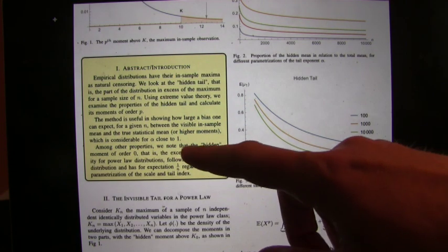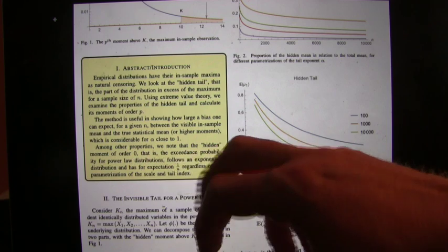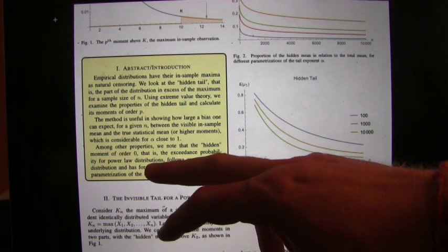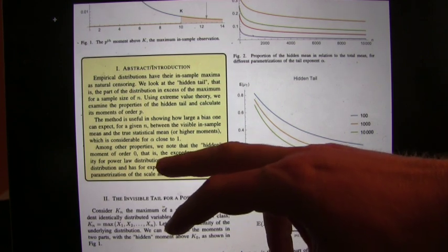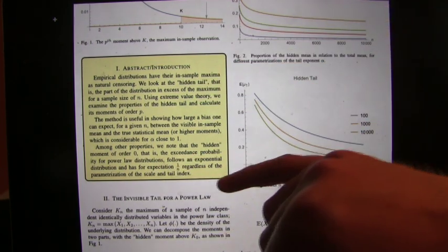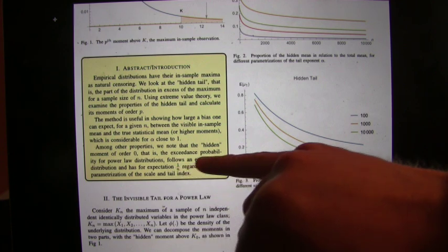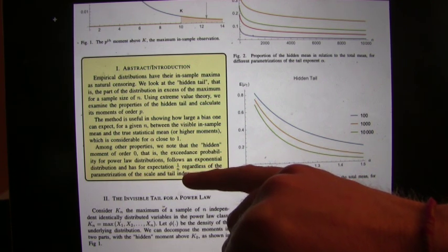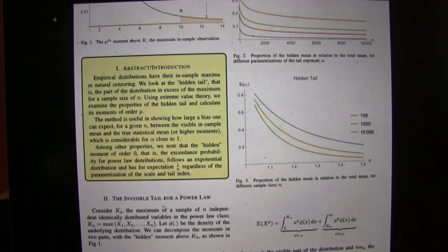Among other properties, we note that the hidden moment of order zero, that is the exceedance probability for power law distributions—so this is a general class of distributions, not just beyond normal distributions—follows an exponential distribution and has an expectation of one over n, regardless of the distribution you're looking at.